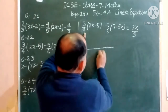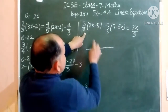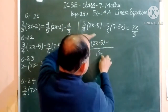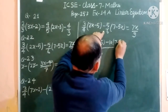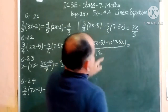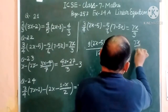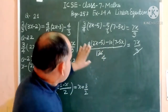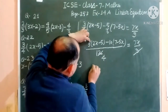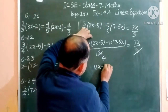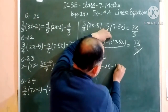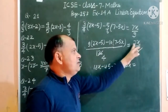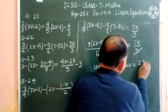Multiplying through by 12: 12/4 = 3, so 3×(2x - 5) = 6x - 15; 12/6 = 2, so 2×(7 - 5x) = 14 - 10x; and 12/3 = 4, so 4×7x = 28x. Expanding gives 18x - 45 - 70 + 50x = 28x.